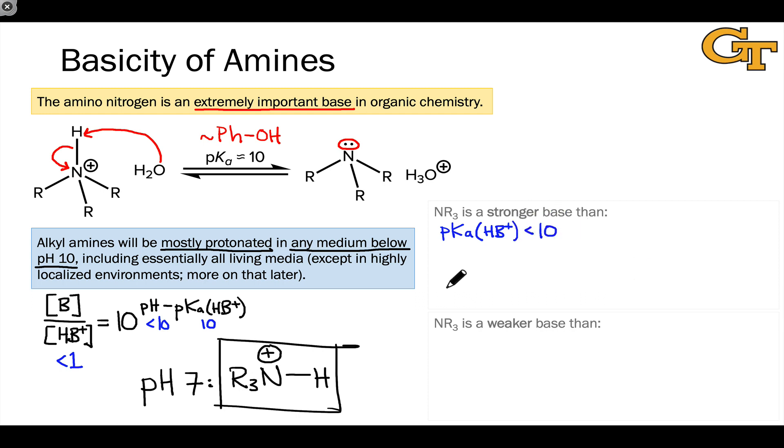And so any base B will have a conjugate acid pKa, let's just call it HB plus, that is less than 10. And this includes a number of rather non-intuitive negatively charged groups, the most important of which is the carboxylate, the conjugate base of a carboxylic acid. Amines can even be stronger than some stabilized carbon bases, like enolates that are flanked by two or more carbonyl groups. The negative charge in this structure is highly delocalized, and that makes this structure even more stable than the neutral amine.